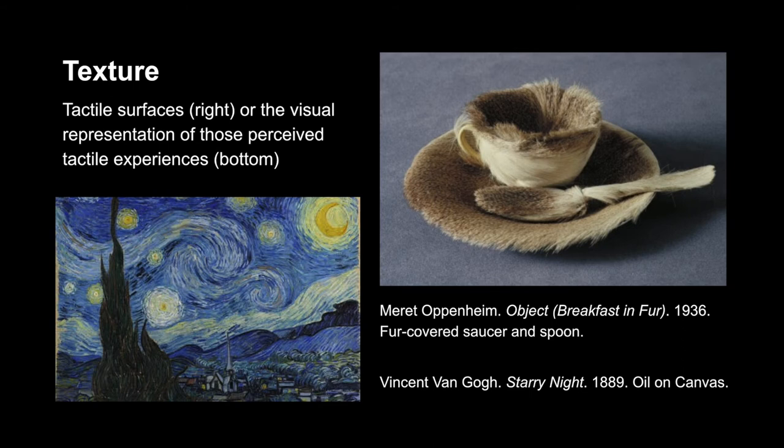Next we have texture, which is a tactile surface or the visual representation of those perceived tactile surfaces. We have Breakfast in Fur, which is just fur adhered to a saucer and spoon — that's actual texture. Then we have the visual representation of texture in Van Gogh's Starry Night: the sky is very textured, the tree is textured, everything is textured as we see with Van Gogh's style.